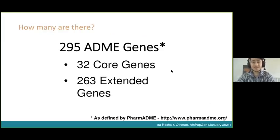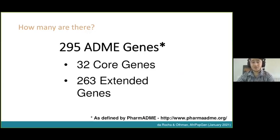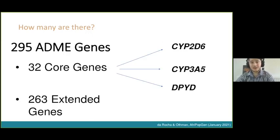How many ADME genes are there? There is a list kept by PharmAdmin which defines 295 ADME genes. Of those, 32 are core genes — genes we have a lot of evidence for, that we know are involved in drug reactions — and 263 extended genes, for which the evidence isn't as strong. The core genes include some favorites: cytochrome is quite prevalent among them.